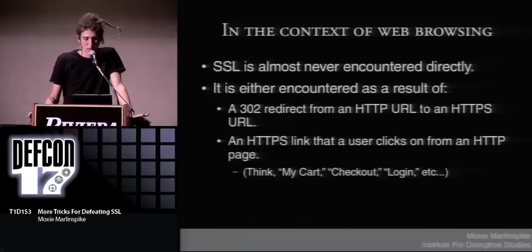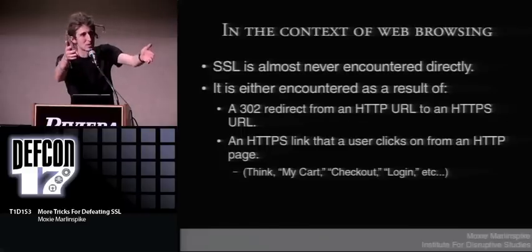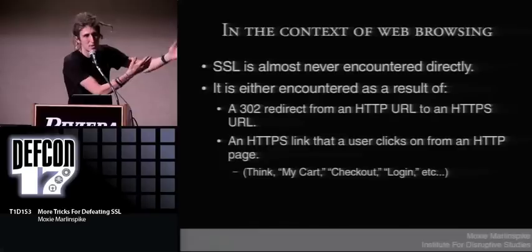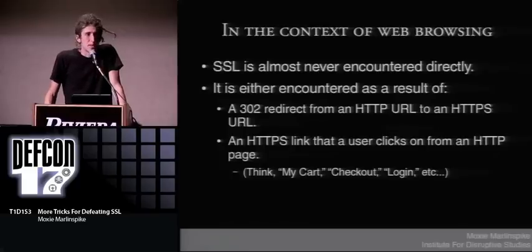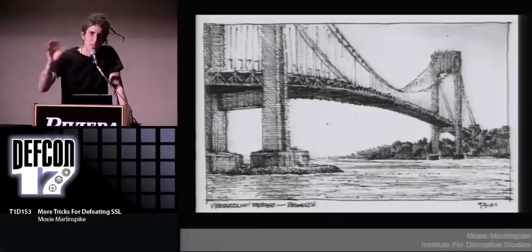It's either encountered as a 302 redirect from an HTTP URL — someone types bankofamerica.com, which makes an HTTP request to the server, and the server responds with a redirect to HTTPS — and the browser gets upgraded to SSL. Or it's encountered through clicking on links. Most users browse along and eventually encounter a link that says "sign in" or "check out," and that's the moment where they encounter SSL on the web. Both of those points are bridges between an insecure and a secure protocol, and they're weak points.